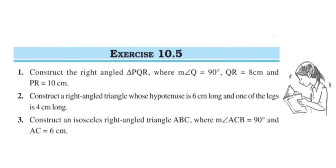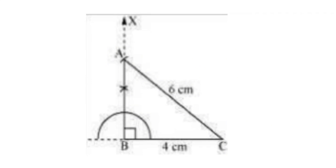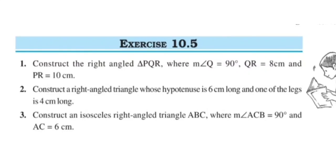Now see Question 2: Construct a right-angled triangle whose hypotenuse is 6 centimeters long and one of the legs is 4 centimeters long. See the steps: first draw a line segment BC of length 4 centimeters. At point B, draw a ray BX making an angle of 90 degrees with BC. Taking C as center, draw an arc of 6 centimeter radius to intersect ray BX at point A. Join A to C to obtain the required triangle ABC.